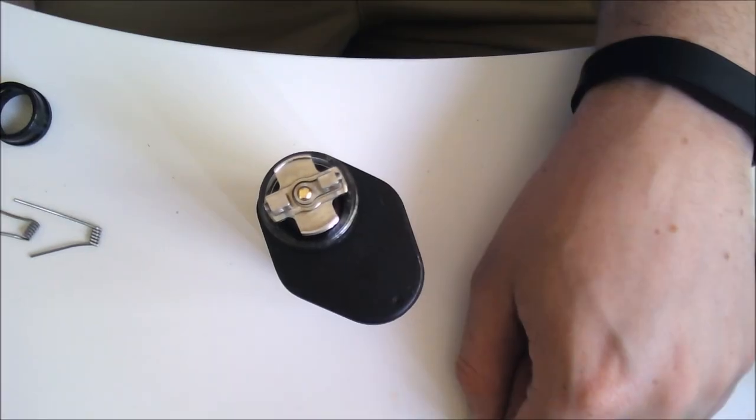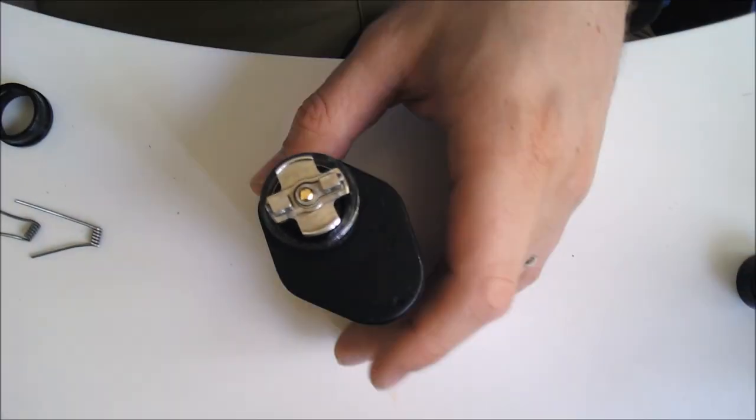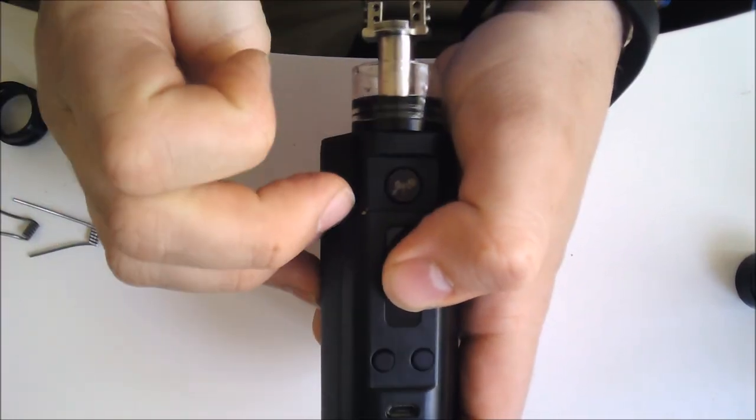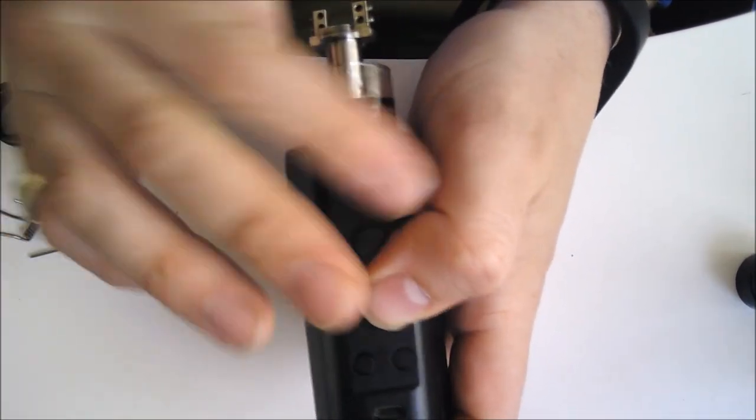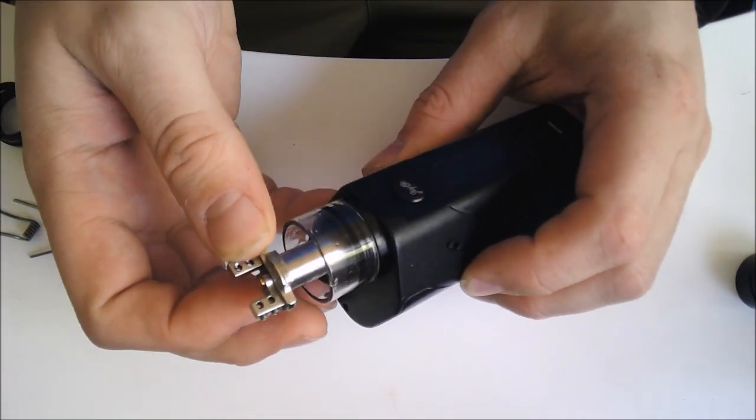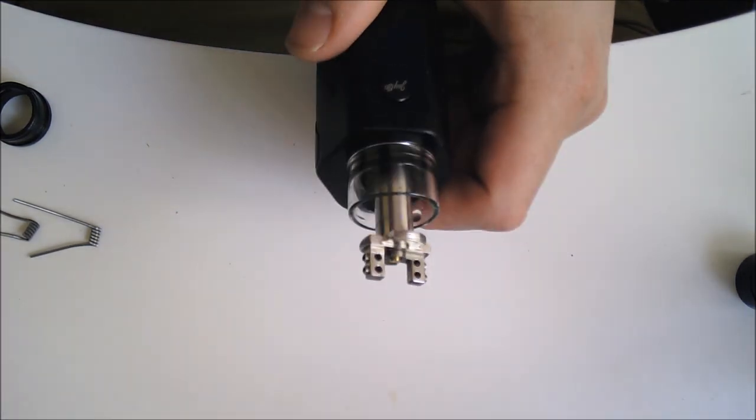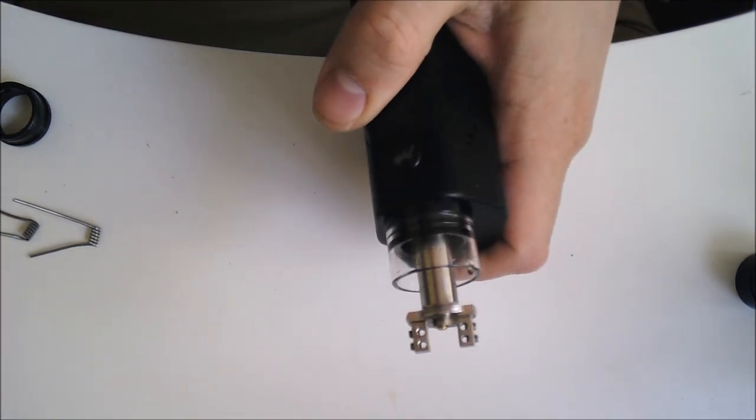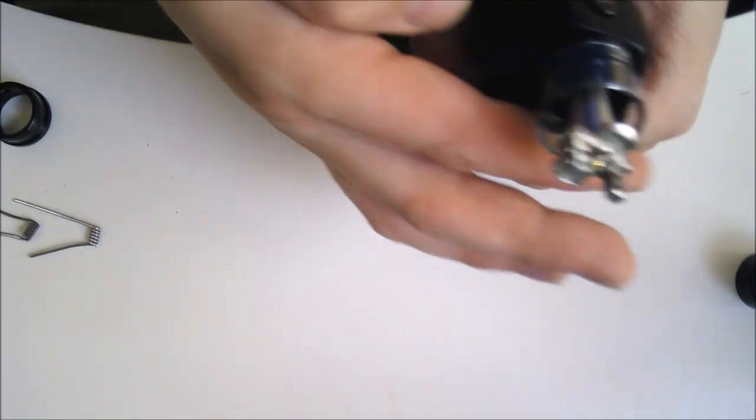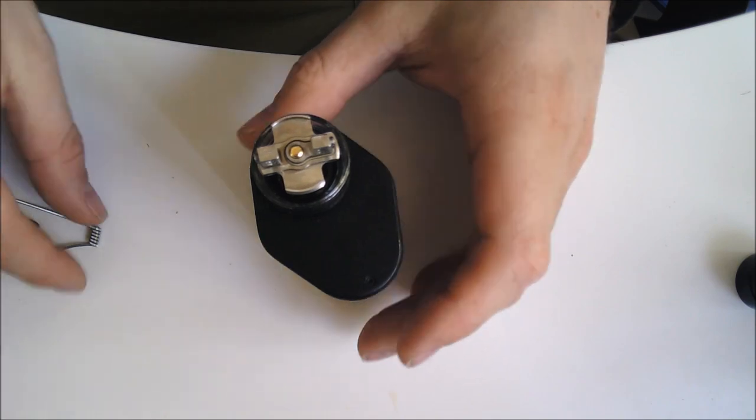Here we have the top of our Limitless RDTA. You can see it's on the reload, obviously off. Don't want to be messing around with it on before you start building. This is completely disassembled as far as it needs to be for building. You can see all the post holes nice and open, it's all cleaned out, which is all good.